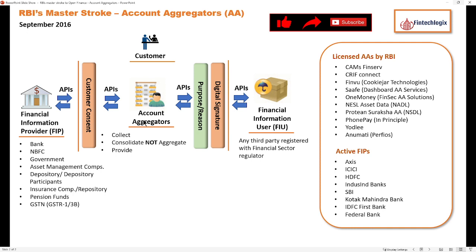Account aggregators collect information based on request and can consolidate it from various sources. However, the important point to note is that RBI has not given sanction to any account aggregator to aggregate or modify any piece of information — they can only consolidate from different parties and provide it to FIUs.